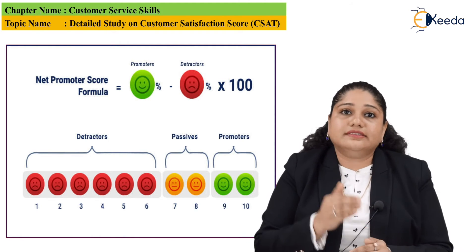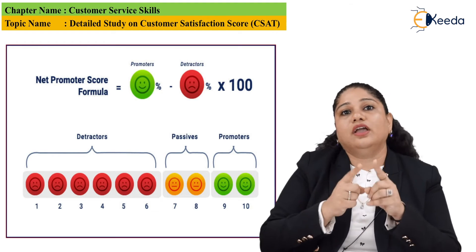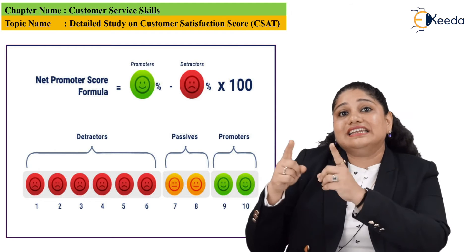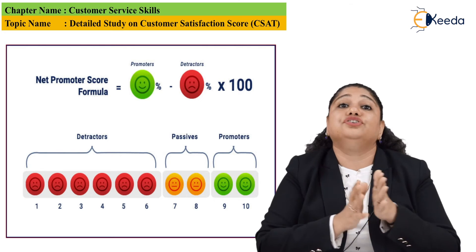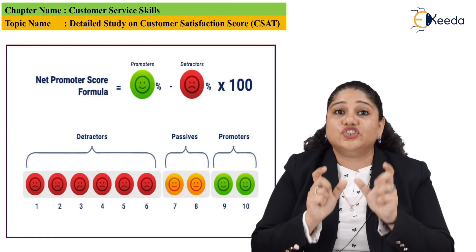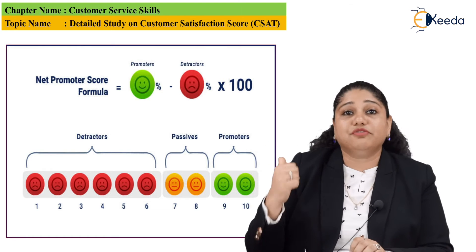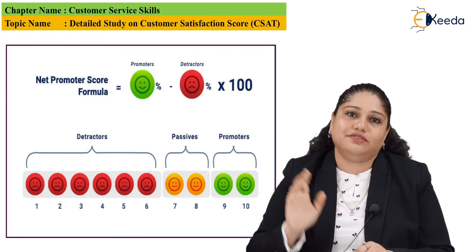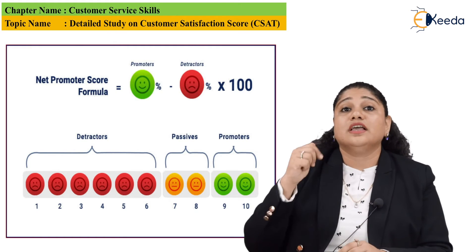On a scale of 1 to 10: scores 1–6 represent detractors, 7–8 are passives, and 9–10 are promoters. If the ratio comes to 60% detractors, 20% passives, and 20% promoters, you need to change your detractor ratio into a promoter ratio. There is a formula for this: Net Promoter Score = (Promoters − Detractors) × 100, which gives you a ratio of how many detractors and promoters you have and how to improve on that scale.